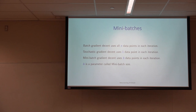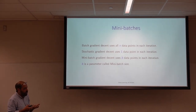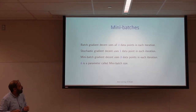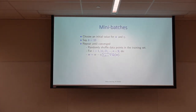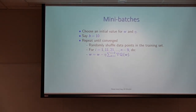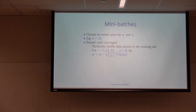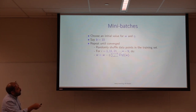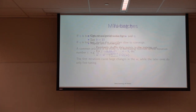Mini-batch gradient descent is the usual practice. You choose a batch size, which is a hyperparameter of the model. In mini-batch you set B as a hyperparameter, and in each update rule instead of taking the average over all N points you take the summation over just B points.